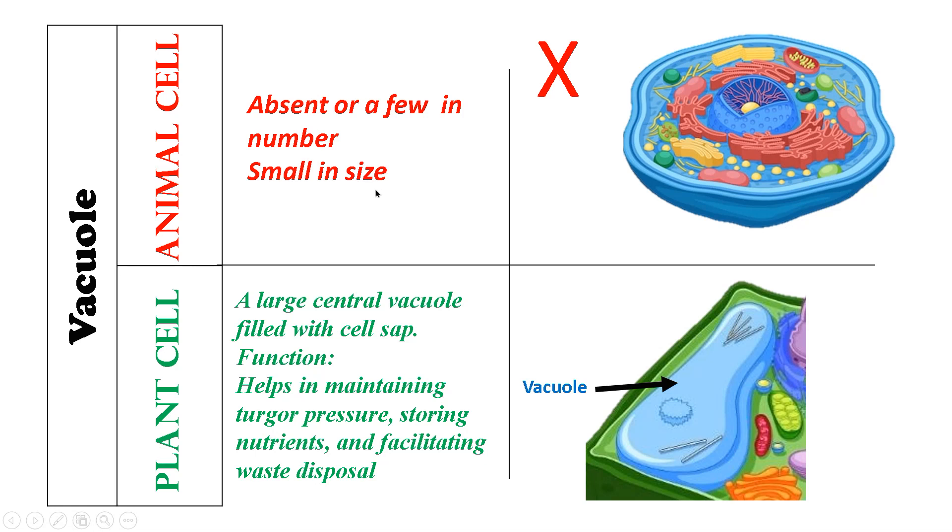On the other hand, the presence of a large central vacuole is an important identifying feature of plant cells. This central vacuole helps in maintaining the turgor pressure within the cell, helps in storing nutrients, and facilitates waste disposal.